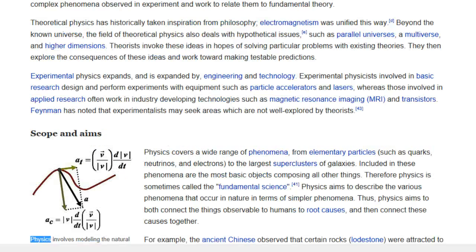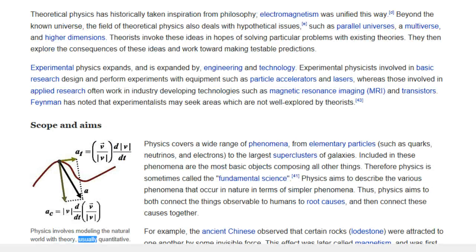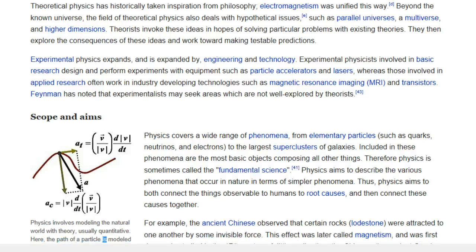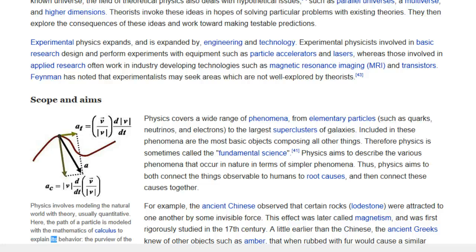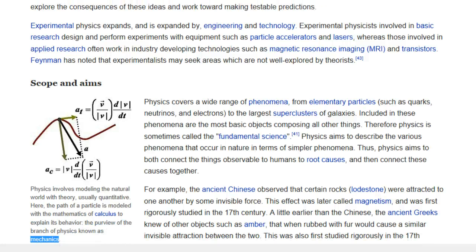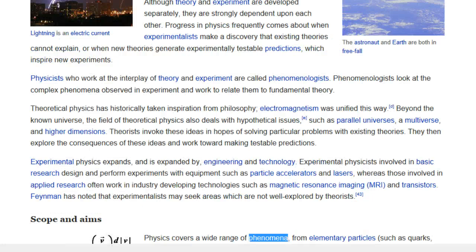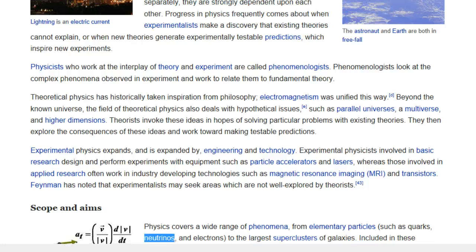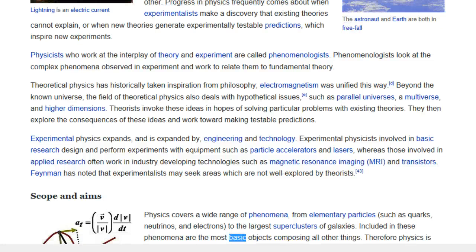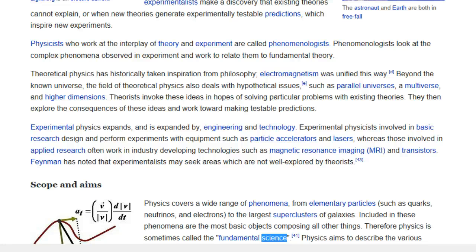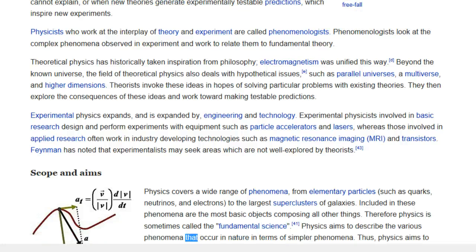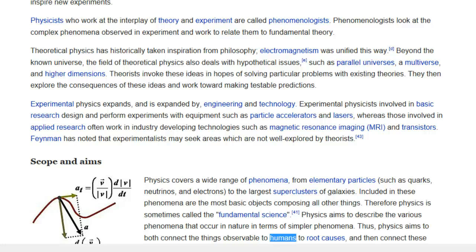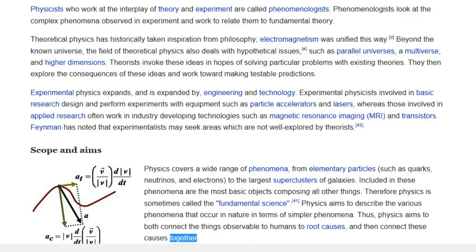Scope and aims. Physics involves modeling the natural world with theory, usually quantitative. Here, the path of a particle is modeled with the mathematics of calculus to explain its behavior, the purview of the branch of physics known as mechanics. Physics covers a wide range of phenomena, from elementary particles, such as quarks, neutrinos, and electrons, to the largest superclusters of galaxies. Included in these phenomena are the most basic objects composing all other things. Therefore physics is sometimes called the fundamental science. Physics aims to describe the various phenomena that occur in nature in terms of simpler phenomena. Thus, physics aims to both connect the things observable to humans to root causes, and then connect these causes together. For example, the ancient Chinese observed that certain rocks, lodestone, were attracted to one another by some invisible force.